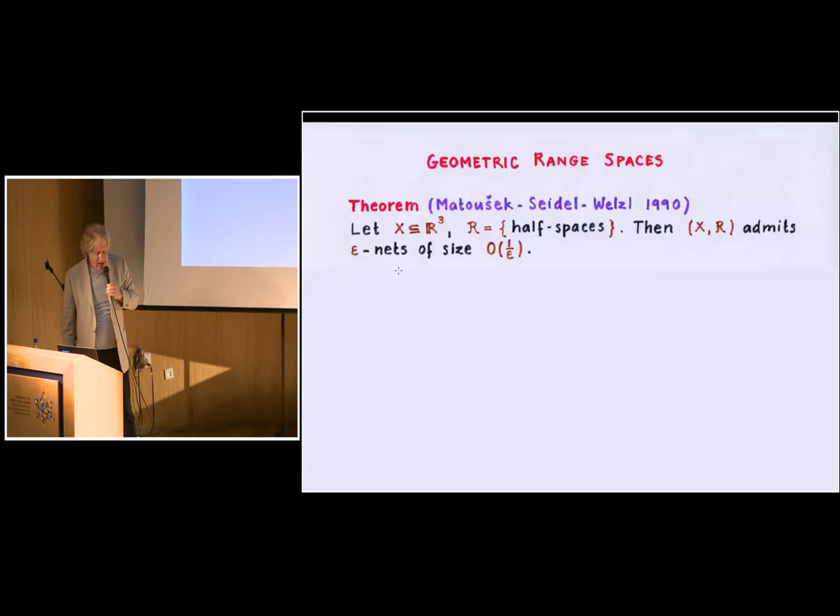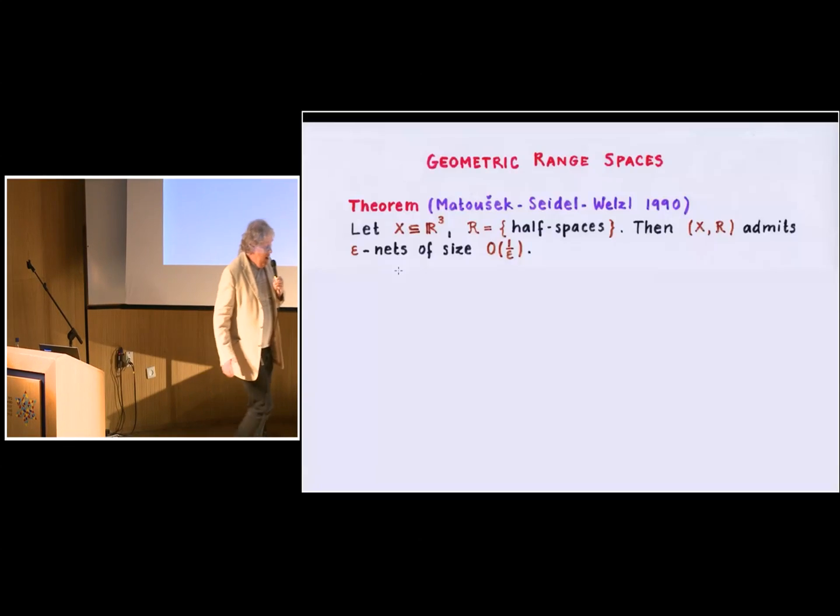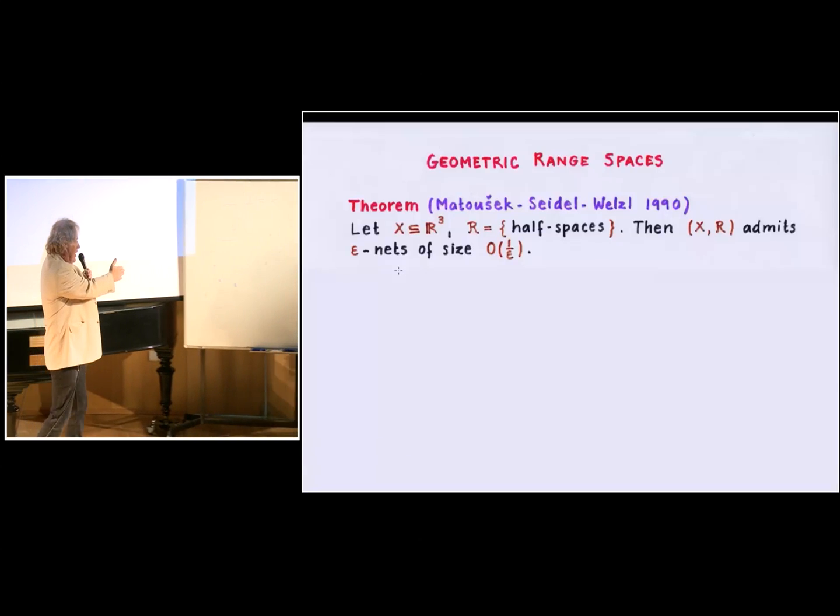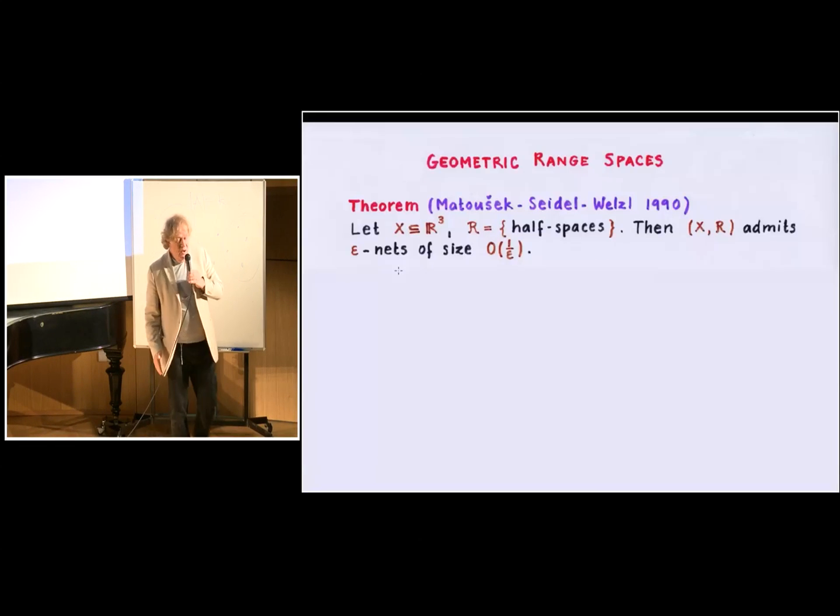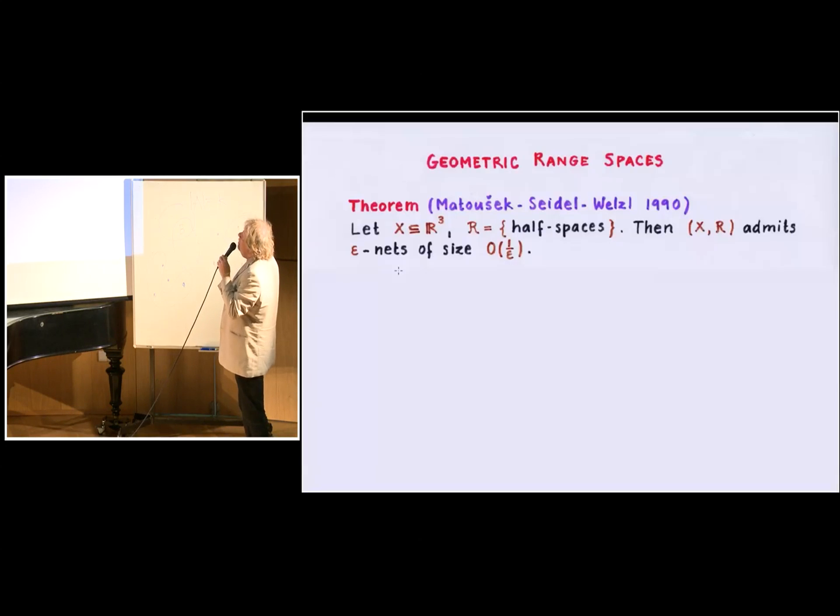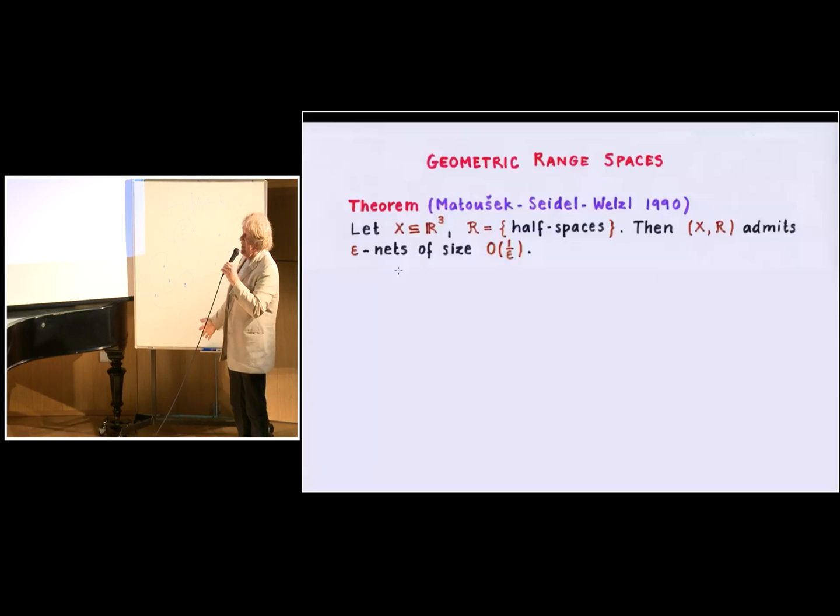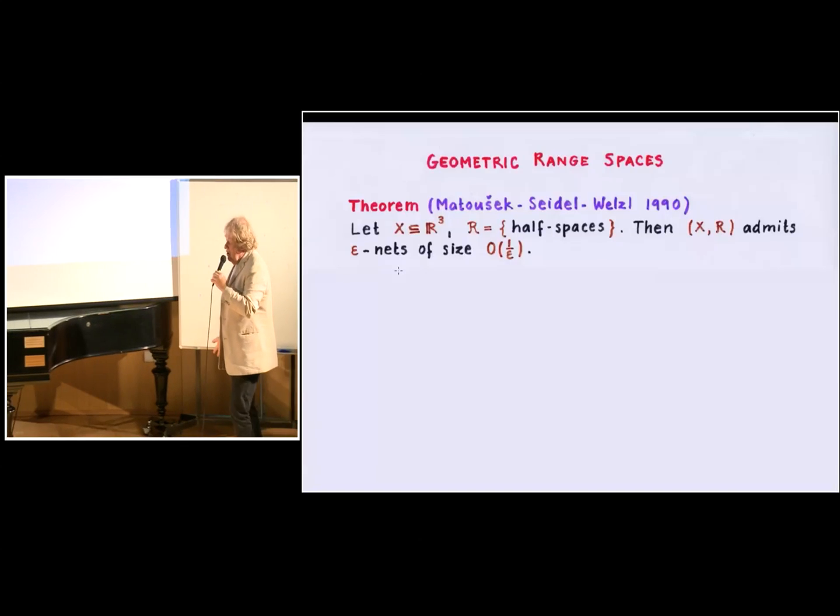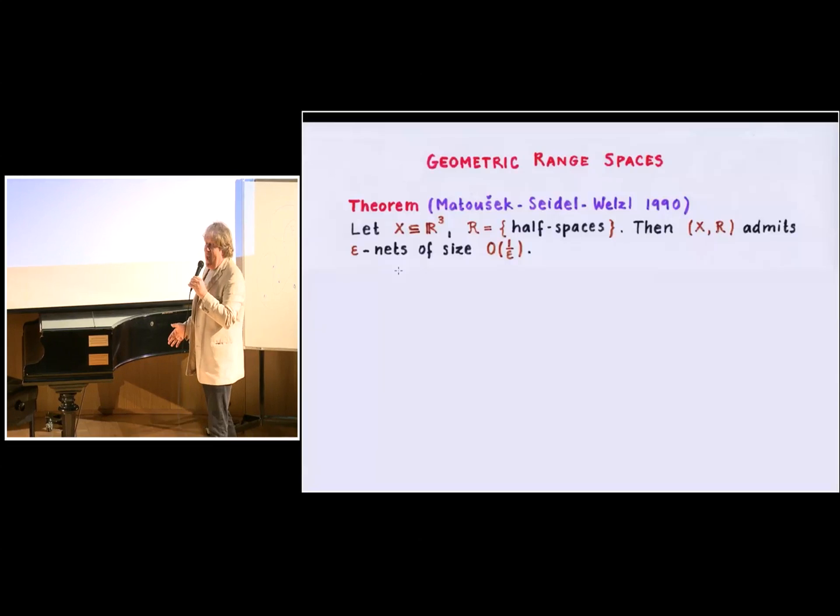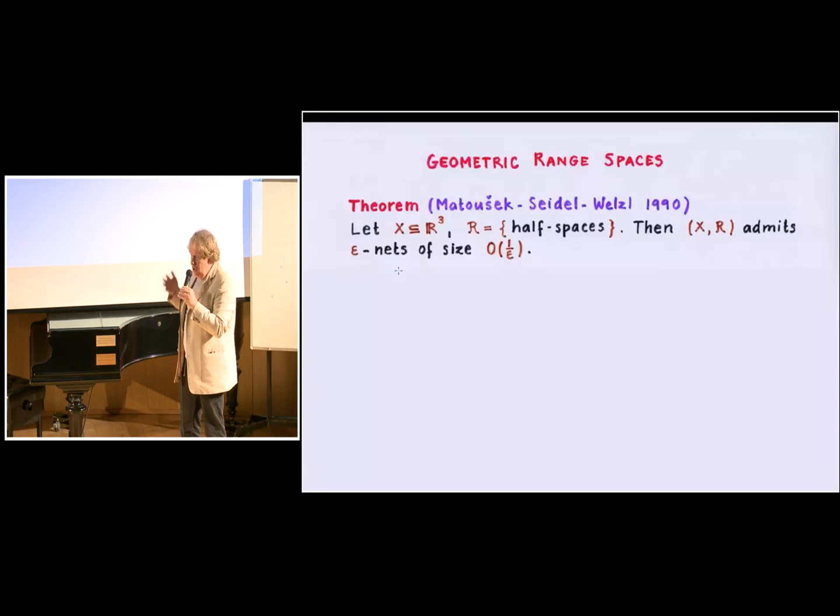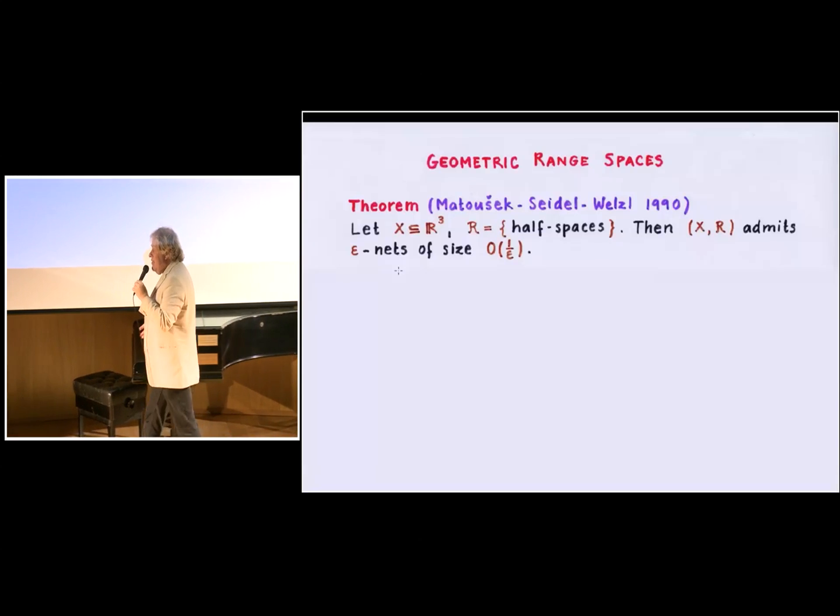Therefore, the hope was that, at least for geometrically defined hypergraphs, this logarithmic factor is not needed. And there were several results pointing in this direction. The first one was the theorem of Matoušek, Seidel and Welzl in 1990, in which they proved that a similar construction, like the construction here with points and circles, in higher dimensions, in three dimensions, this has a better solution. So if we consider any set of N points in three space, and these are the vertex set of the hypergraph, the hyperedges are the intersections of this point set with half spaces, then such a hypergraph has an epsilon net of size only constant times one over epsilon.